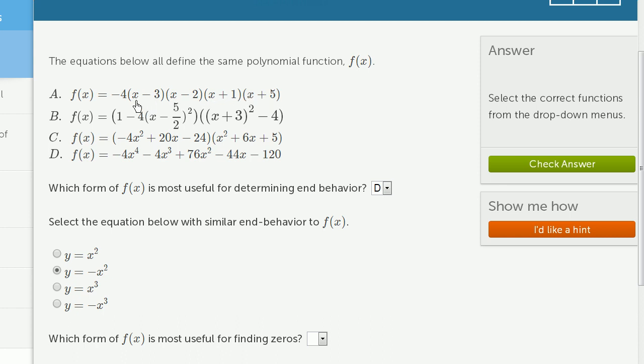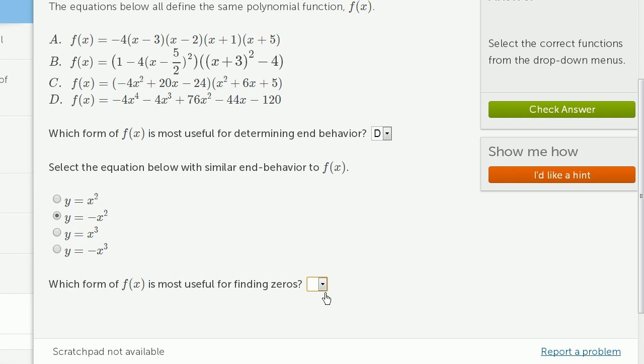So this would be zero when x equals three, x equals two, x is negative one, and x is negative five. So a is definitely the most useful for finding zeros.